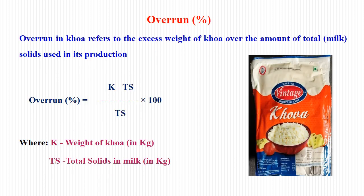Overrun in Khoa refers to the excess weight of Khoa over the amount of total milk solid used in its preparation. The formula is: Overrun = (K − Ts) / Ts × 100, where K is the weight of Khoa obtained and Ts is the total solid present in the milk, and that extra amount is expressed in percent.